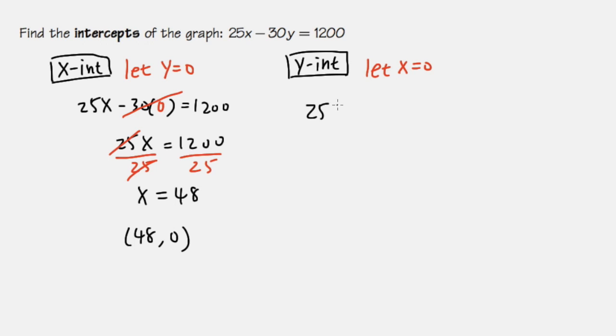We will have 25 times the x. Then open up parentheses. And the x value is this 0 right here. Let me plug in. And then we will have minus 30y. It's equal to 1200.